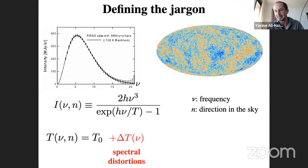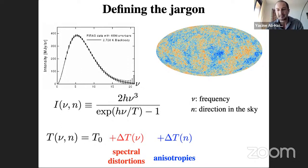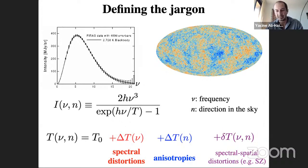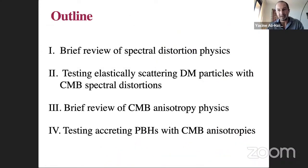If T is the same in all directions but has a frequency dependence, the CMB spectrum is isotropic but not a perfect blackbody — this is called spectral distortions. If T has no frequency dependence but varies directionally (a true blackbody but with different temperatures in each direction), these are anisotropies. Perturbations depending on both frequency and direction are the Sunyaev-Zeldovich effect, which I won't discuss.